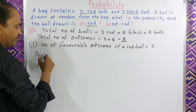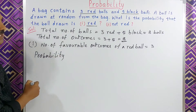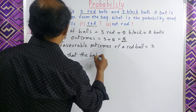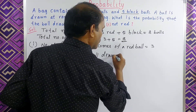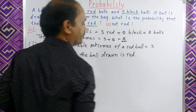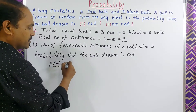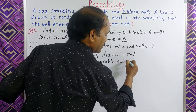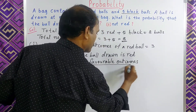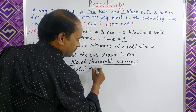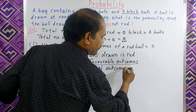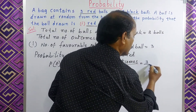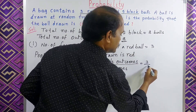Probability that the ball drawn is red — P of E is equal to the formula: number of favorable outcomes by total number of outcomes. What are the number of favorable outcomes? 3. Total number of outcomes? 8. So P of E equals 3 by 8.